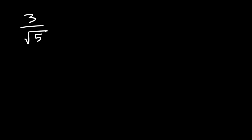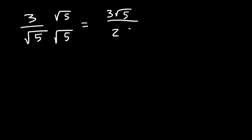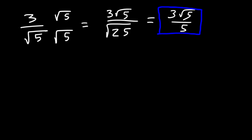Let's say you see a problem like 3 divided by the square root of 5, and it tells you to rationalize the denominator. Whenever you need to rationalize the denominator, you want to get rid of the square root in the bottom of the fraction. To do that, multiply the top and the bottom by the square root of 5. 5 times 5 is 25, and the square root of 25 is 5. The goal is simply to get rid of the radical in the bottom.